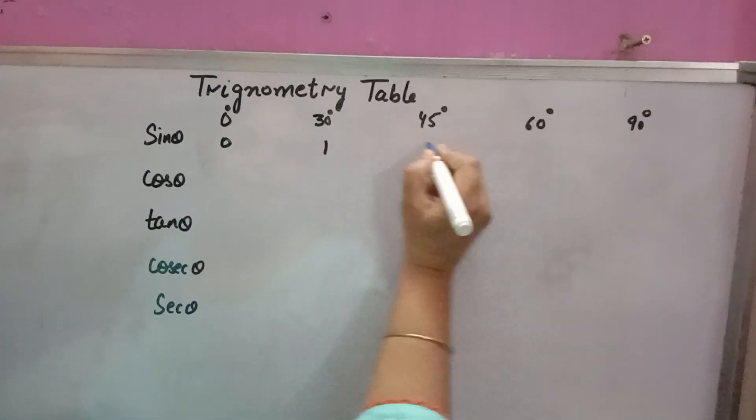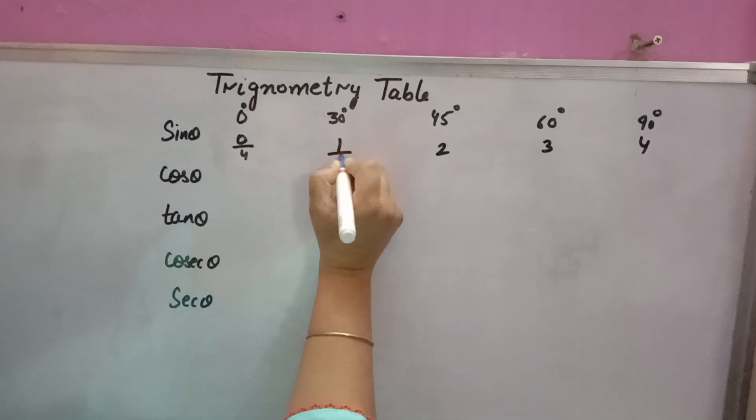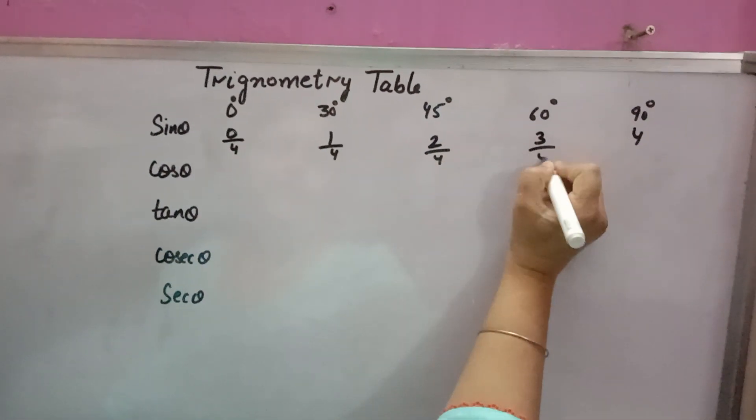We will write 0, 1, 2, 3, 4, then divide all the numbers by 4. We will get this.